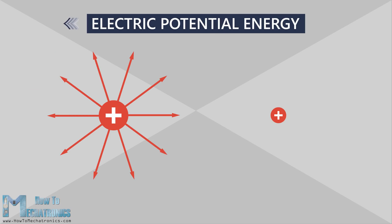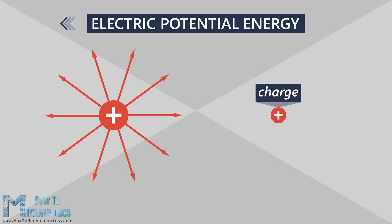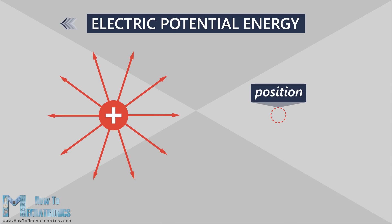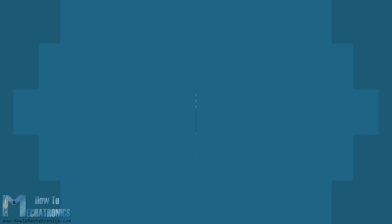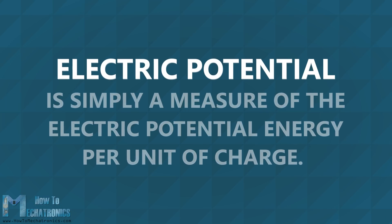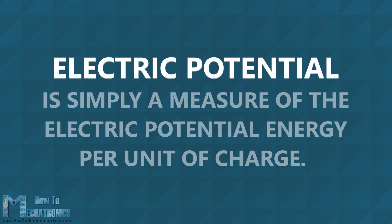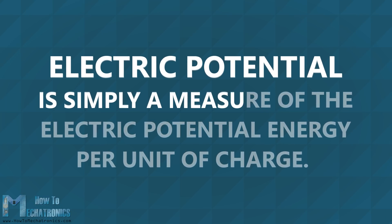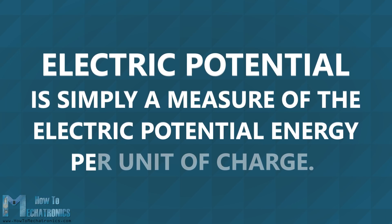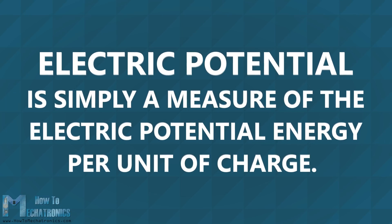In the previous video we talked about electric potential energy, which is dependent upon the charge of the object experiencing the electric field, while electric potential is only dependent upon the position of the object. So electric potential, or just potential, is simply a measure of the electric potential energy per unit of charge.